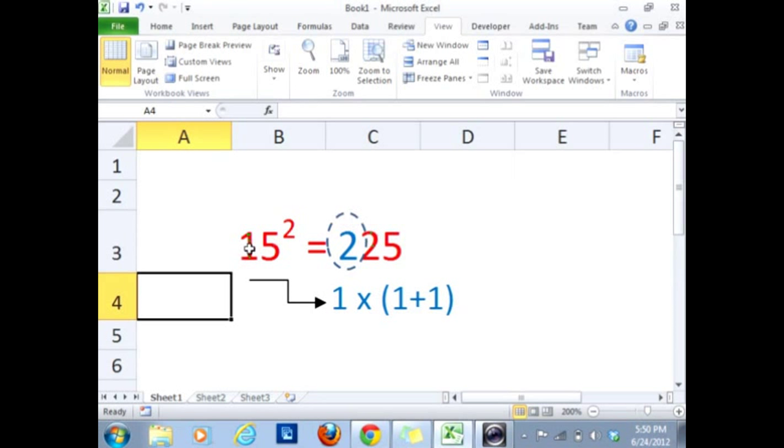Again, what I did is that I have 1 in the first place, so I multiply 1 by 2 and put 2 here, and then add 25 in the end.